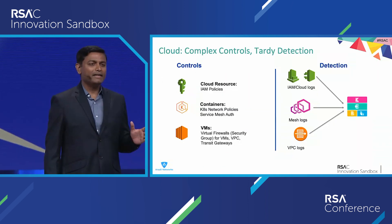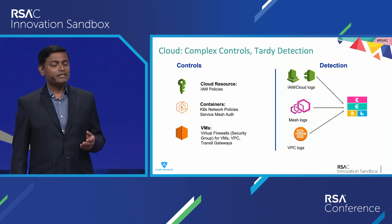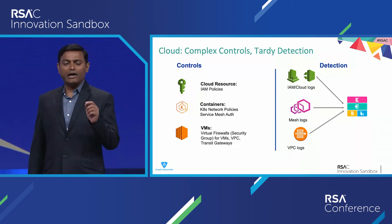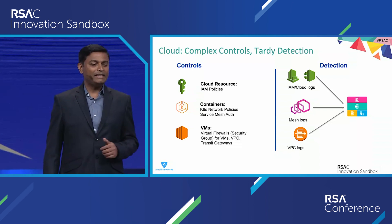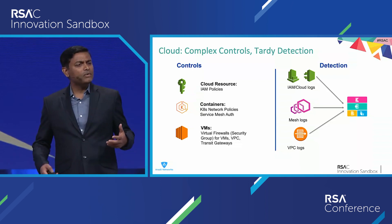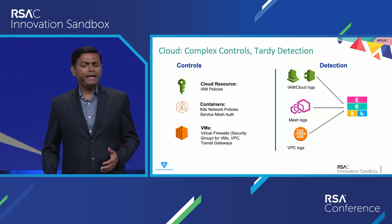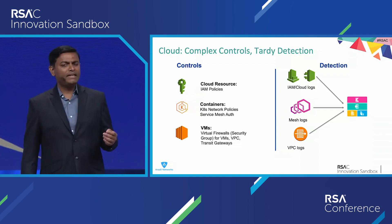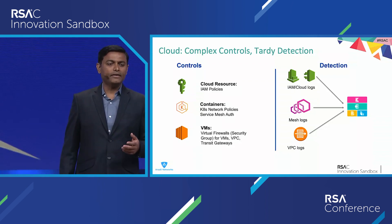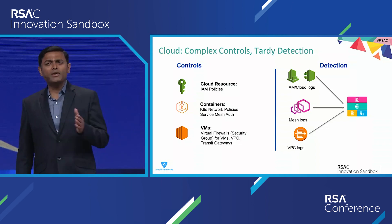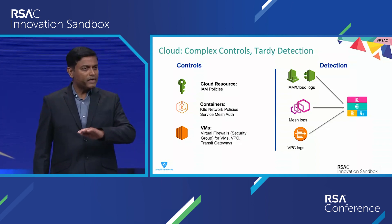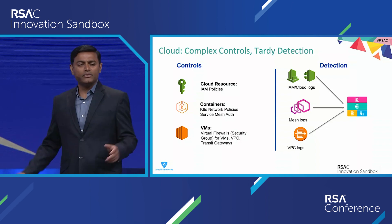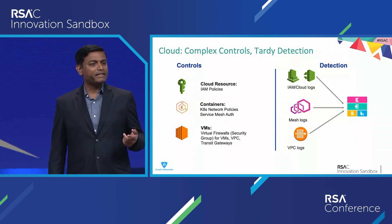Dealing with cloud APIs is complex. As part of the shared responsibility model, you are supposed to securely program those APIs. If you are dealing with cloud resources, you have to configure IAM with least privileges. Kubernetes brings its own set of controls and a whole new configuration paradigm. When dealing with applications on virtual machines, you have to deal with legacy controls like virtual firewalls and security groups. Misconfiguration leads to overprivilege that attackers abuse to move around in your environment and cause material damage.